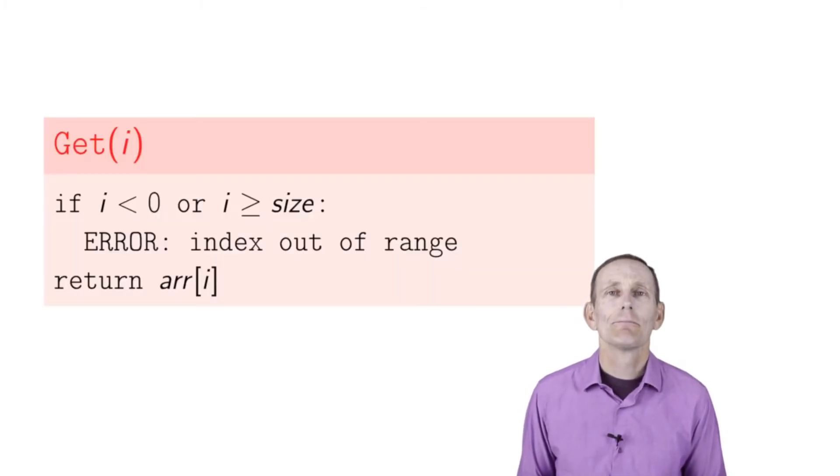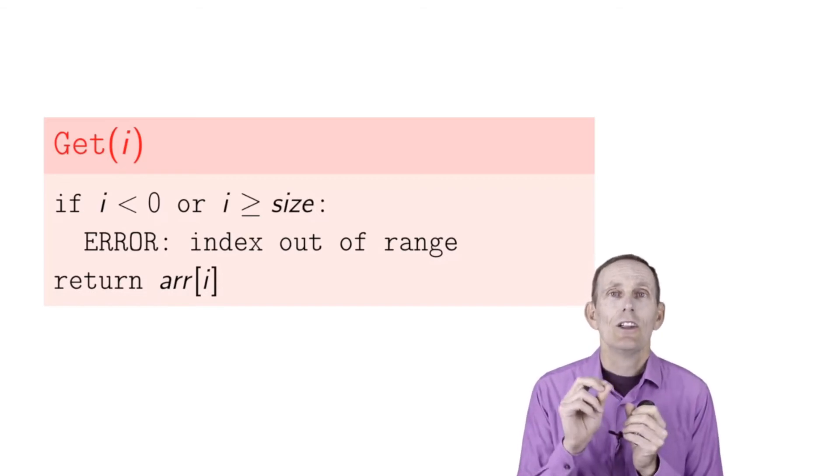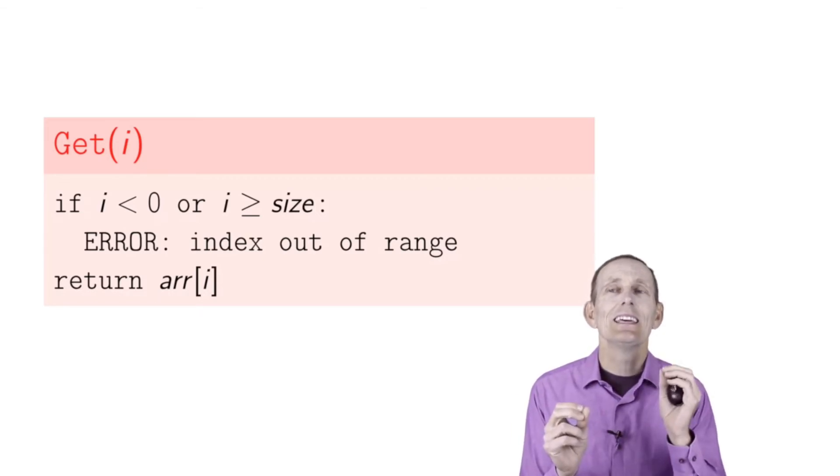Let's look at some implementations of the particular API methods. Get is fairly simple. We're going to assume we're doing zero-based indexing here. If we want to get index i, we first check and make sure i is in range - that is, is it non-negative and is it within the range zero to size minus 1?